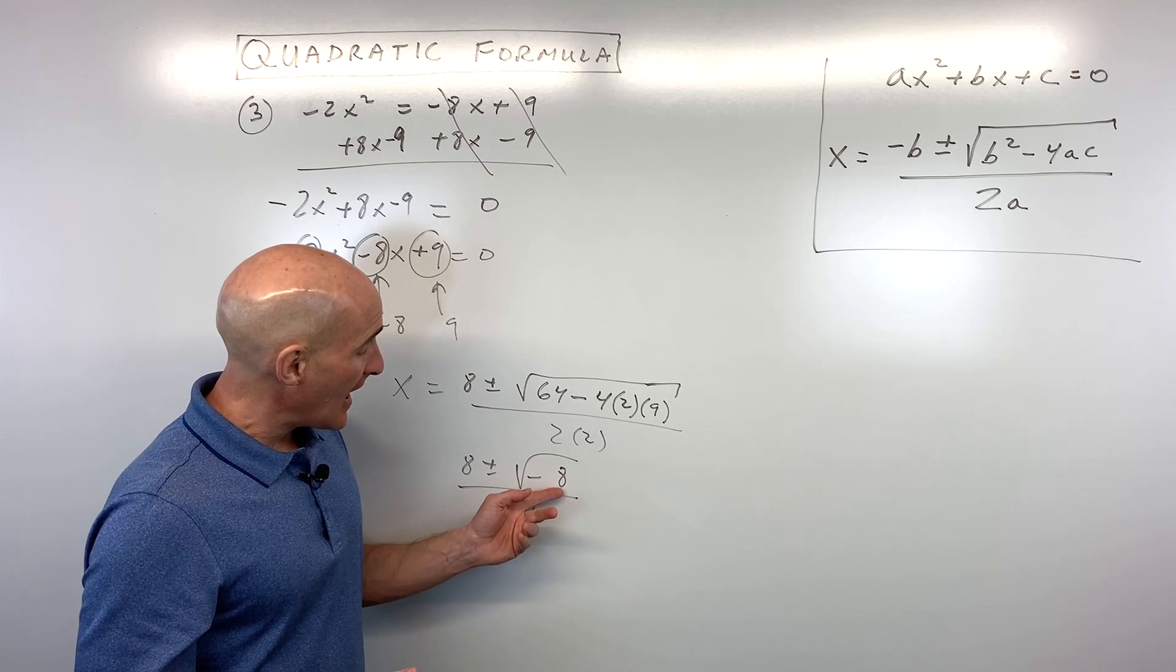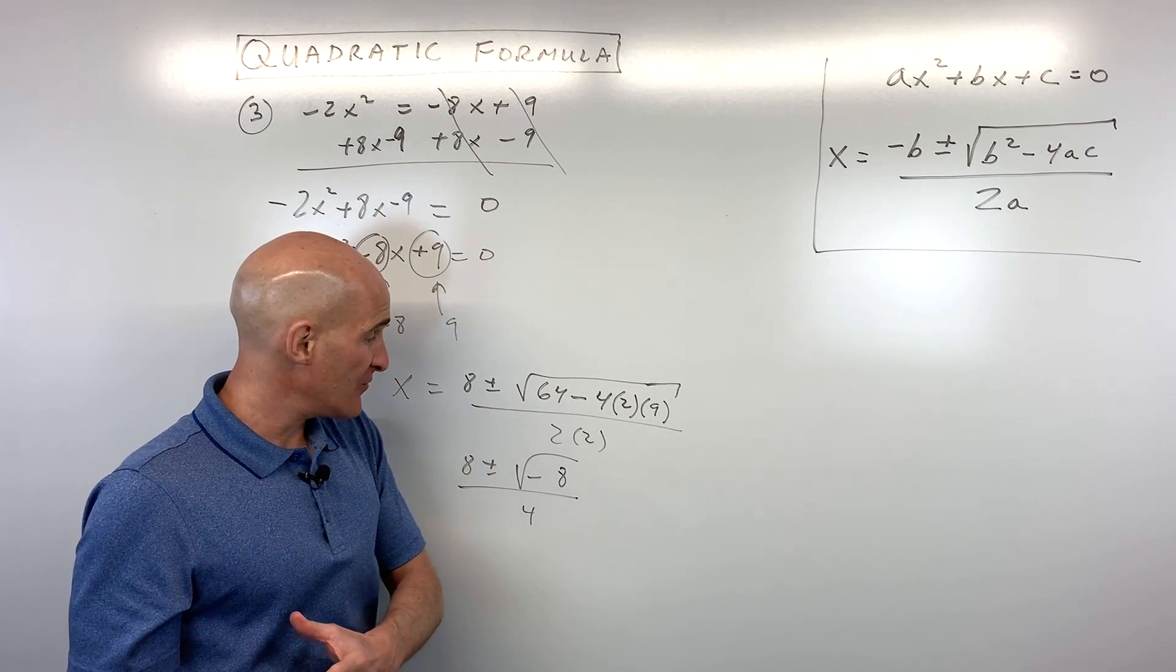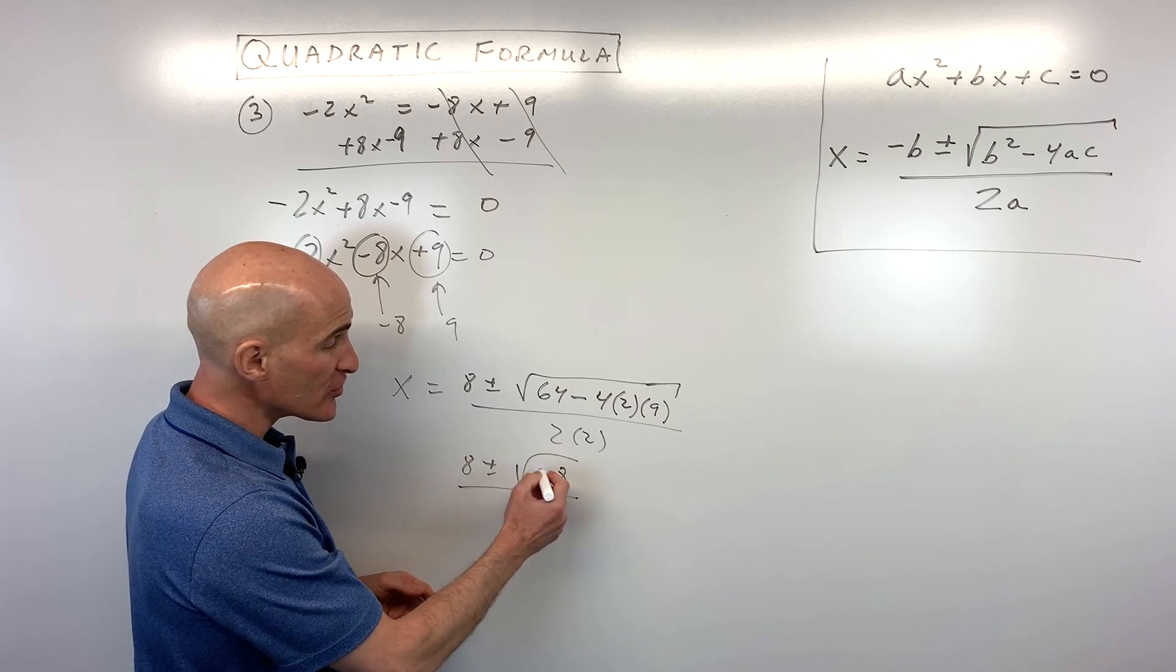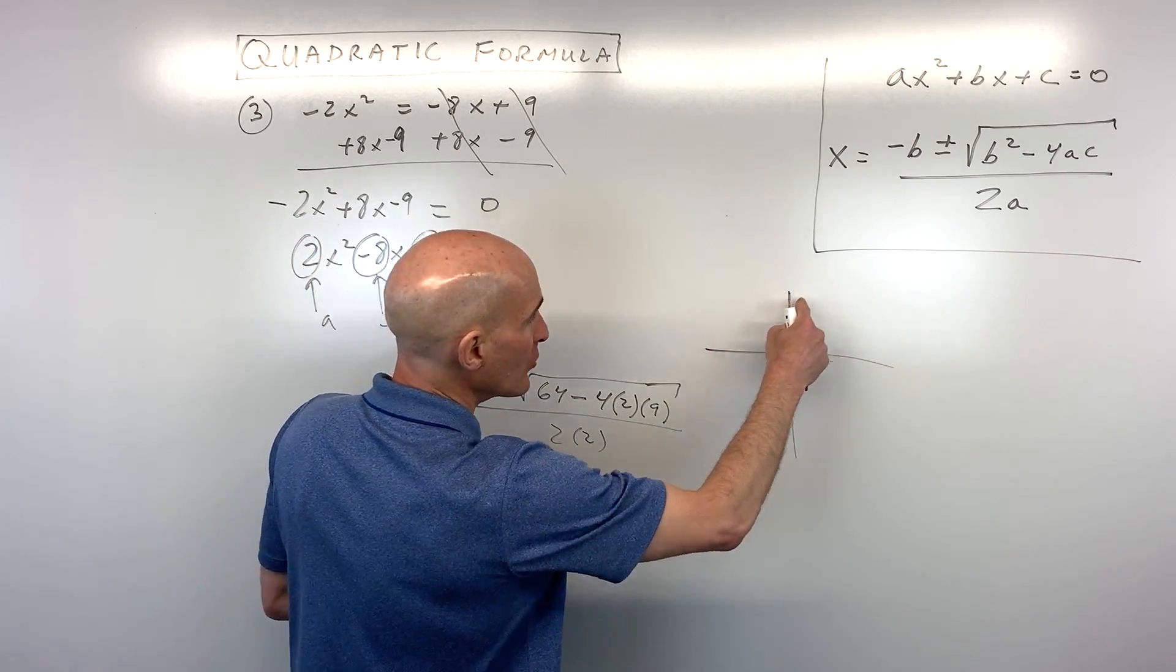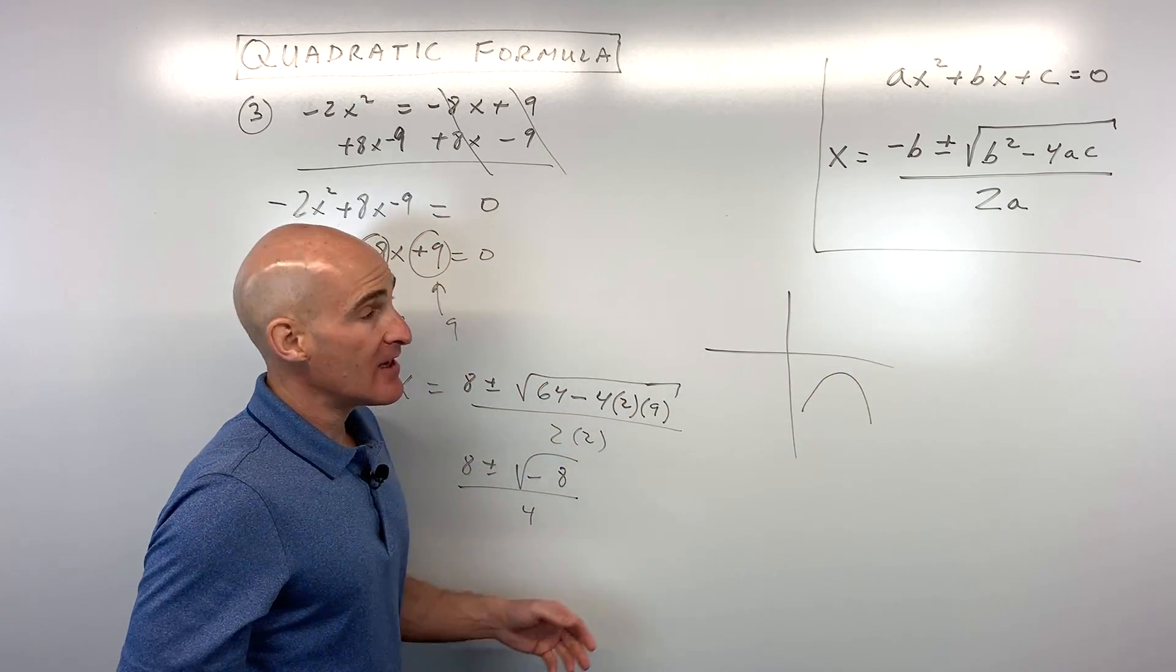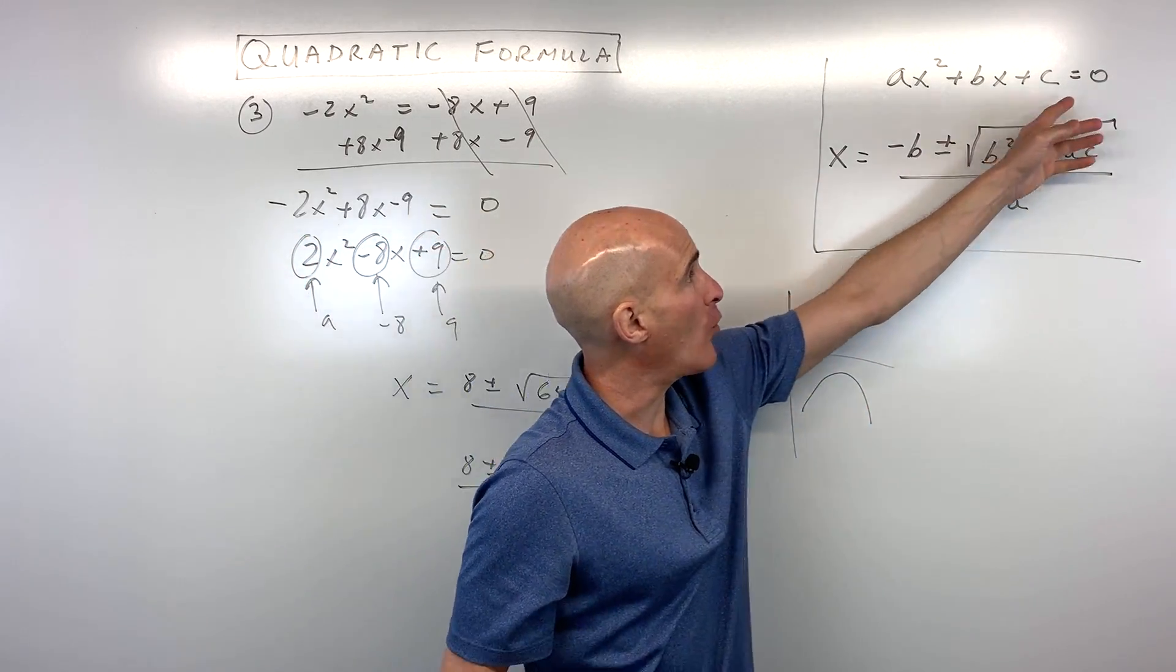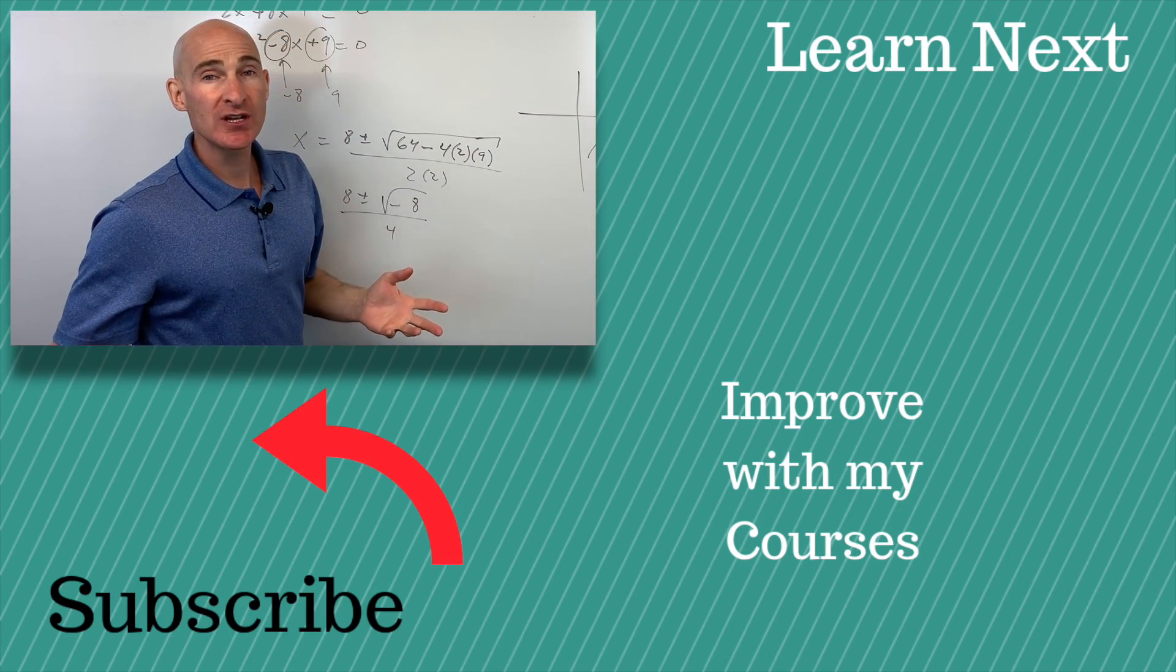Now, you might be saying, Mario, how do you take the square root of negative 8? What number times itself is a negative number? Well, this is actually going to give us an imaginary number. But for the purposes of this video, this is going to be what we call no real solution. And if you were to graph this parabola, what's going to happen is it's going to look something like this, where it doesn't cross the x-axis. And so that's why you're not having any real solutions. There's not going to be any x value that's going to make the y value equal to 0. So in this case, no real solution.